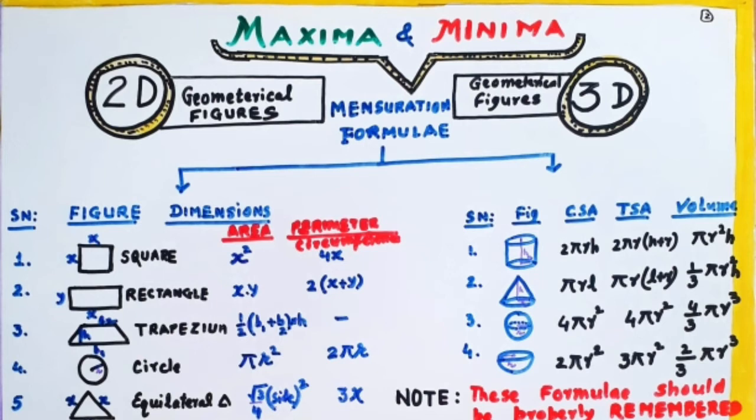area of square is x square, perimeter is 4x. Rectangle, x into y, length into breadth, 2 into x plus y. Trapezium, half into base 1 plus base 2 into height. Circle, pi r square, 2 pi r.